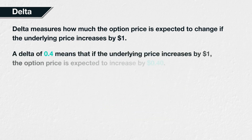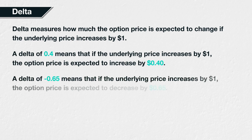An option with a delta of 0.4 means that if the underlying price increases by $1, the option price is expected to increase by $0.40. An option with a delta of minus 0.65 means that if the underlying price increases by $1, the option price is expected to decrease by $0.65.